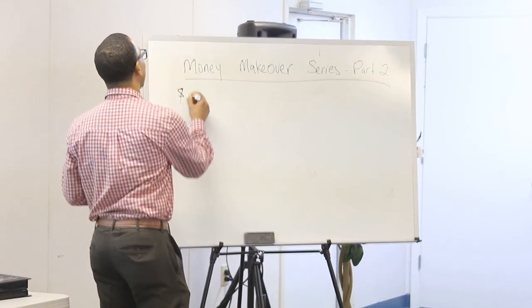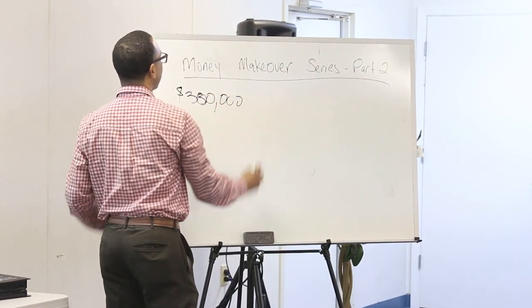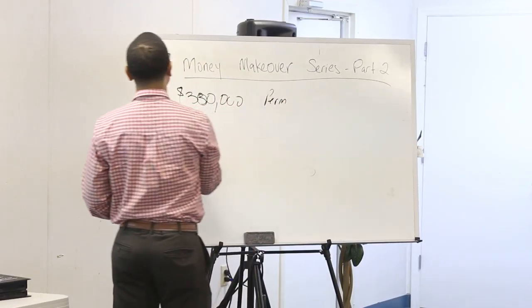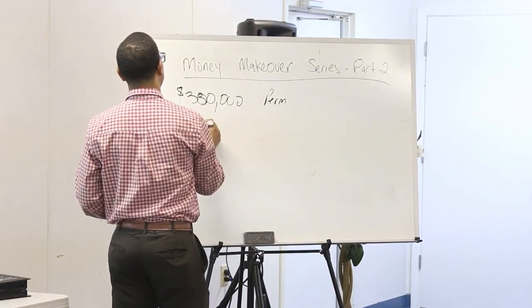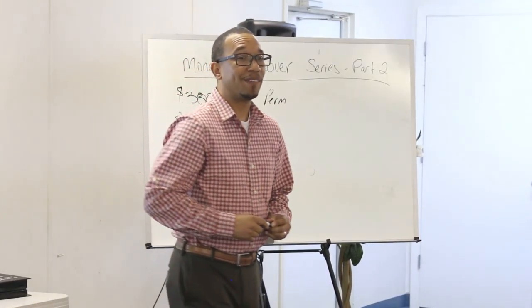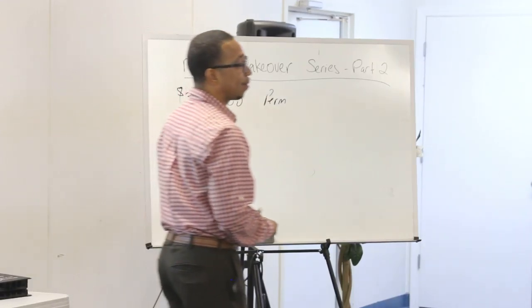So let's say we take that same scenario. We have a $300,000 policy. Now this is a permanent policy, and we're paying $100 a month. You can have that for the rest of your life, you're paying that $100 a month for the rest of your life.